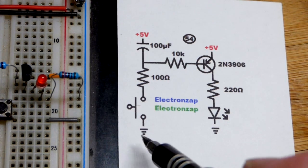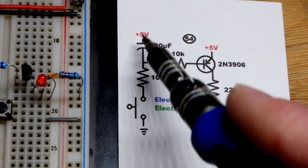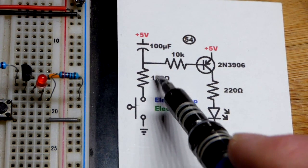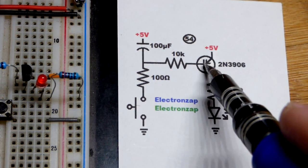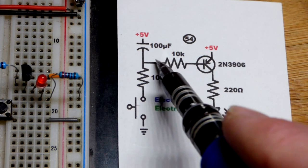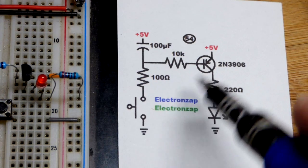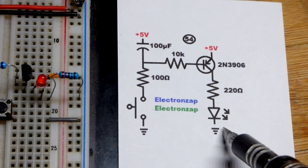We press the switch. A couple things happen: the capacitor quickly charges through that path there, pretty quickly because it's a 100 ohm resistor. There's also a path from emitter to base to ground. When the switch is closed, a little bit of emitter to base current allows a lot more emitter to collector current. Ultimately the LED and the resistor will set the current.